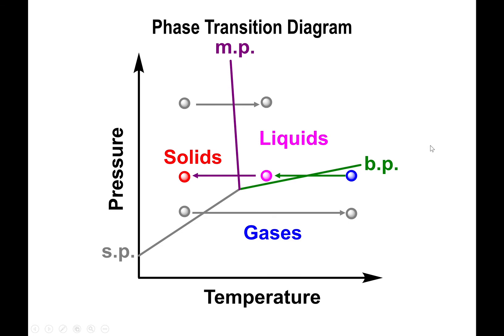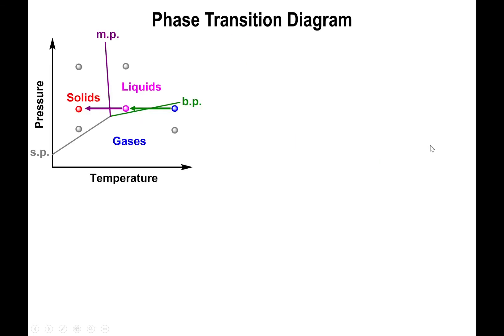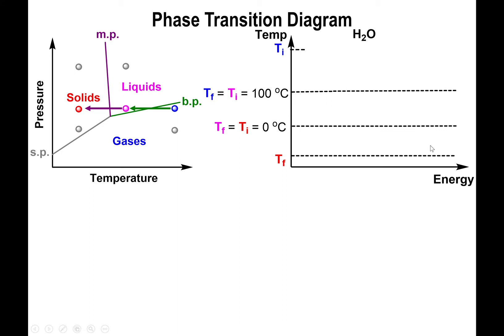As I was saying in the previous example, the first thing you want to do is identify your substance's phase transition temperatures. If it happens to be water, the melting point is 0°C and the boiling point is 100°C. For any other substance, those values will be given to you. You draw two horizontal lines representing the melting and boiling points, then place your initial and final temperatures correspondingly.